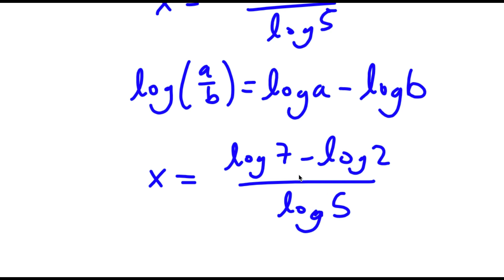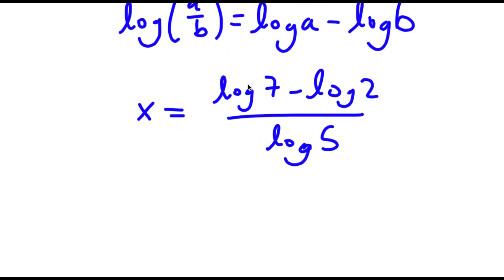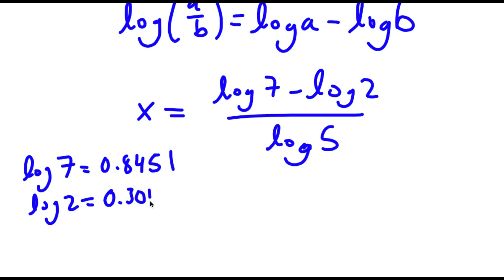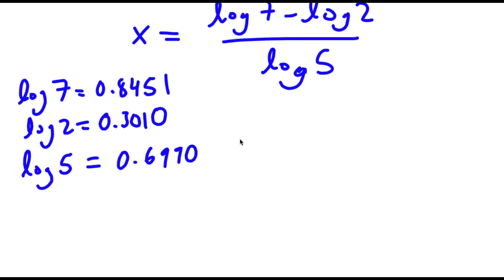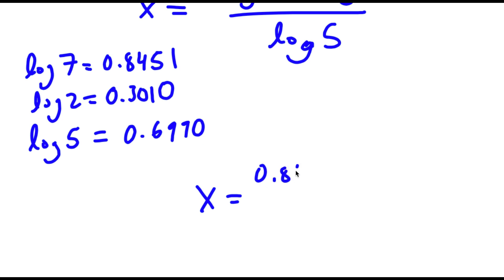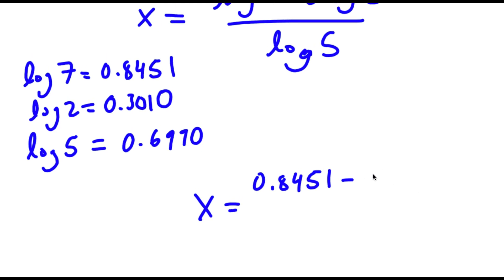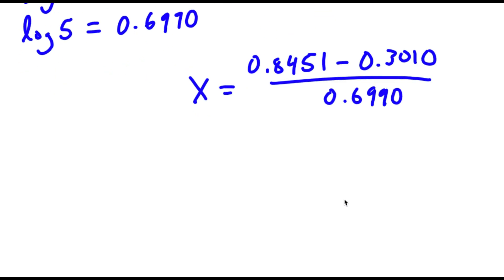Now that this is all simplified, all we need to do is plug in the values of log 7, log 2, and log 5. Log 7 is equal to 0.8451, and log 2 is equal to 0.3010. So I have x is equal to 0.8451 minus 0.3010, and I have this over 0.6990. Simplifying all of this, we get x is equal to 0.7784.